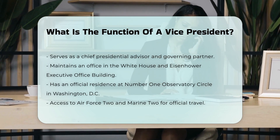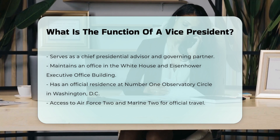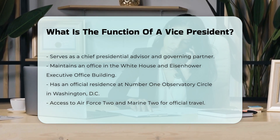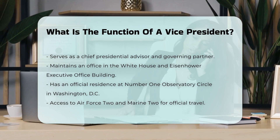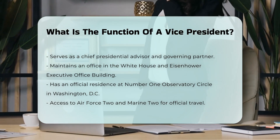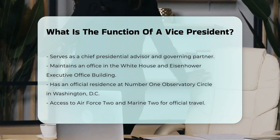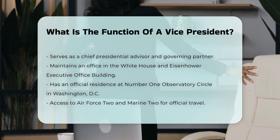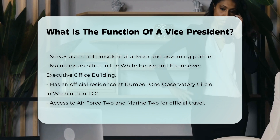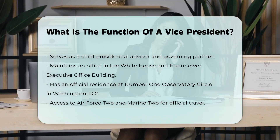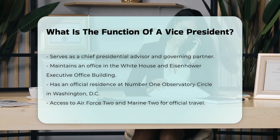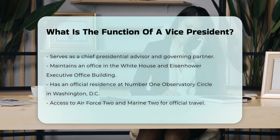Additionally, the vice president may help advance the administration's legislative priorities and can serve as a chief presidential advisor and governing partner. The vice president has an office in the West Wing of the White House and in the Eisenhower Executive Office Building. They also maintain an official residence at No. 1 Observatory Circle in Washington, D.C., and have access to Air Force II and Marine II when traveling.